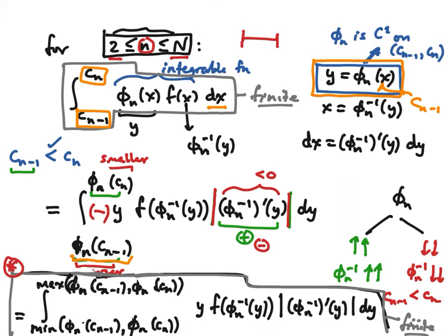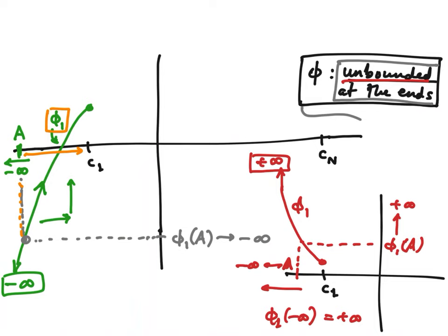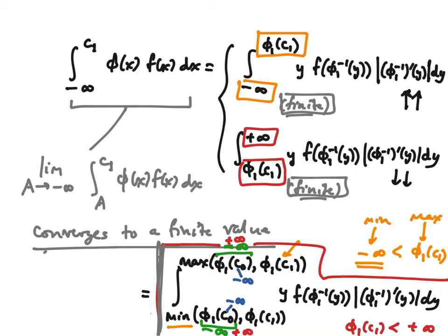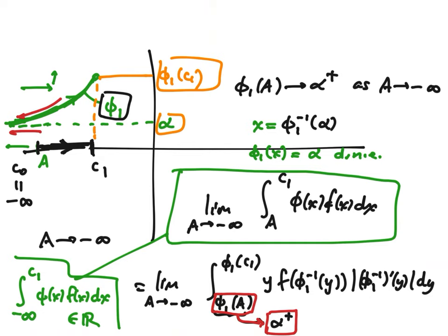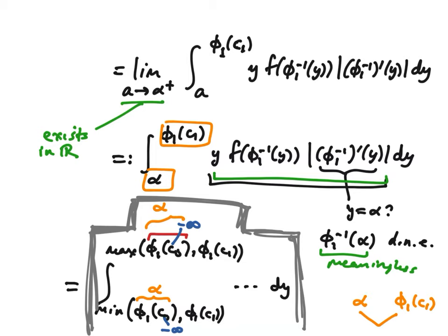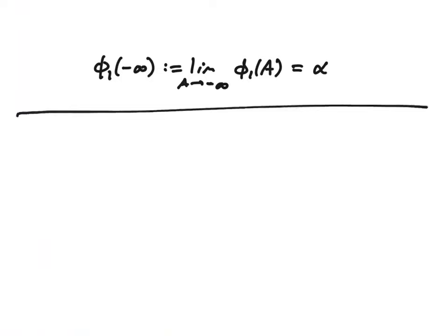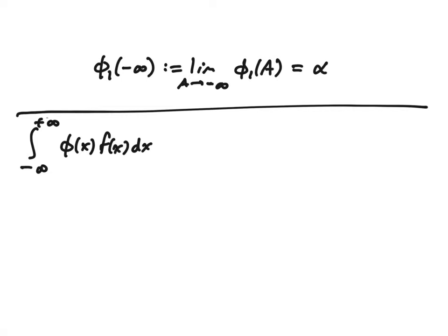In all cases — whether there are no improper integrals, whether φ is unbounded at both ends, or whether there's an asymptote — we get the exact same formula, and in all cases the answer is finite and makes perfect sense. Now that I know the formula in the gray box holds for every single n, I can just sum over all the values of n, which covers all the intervals.